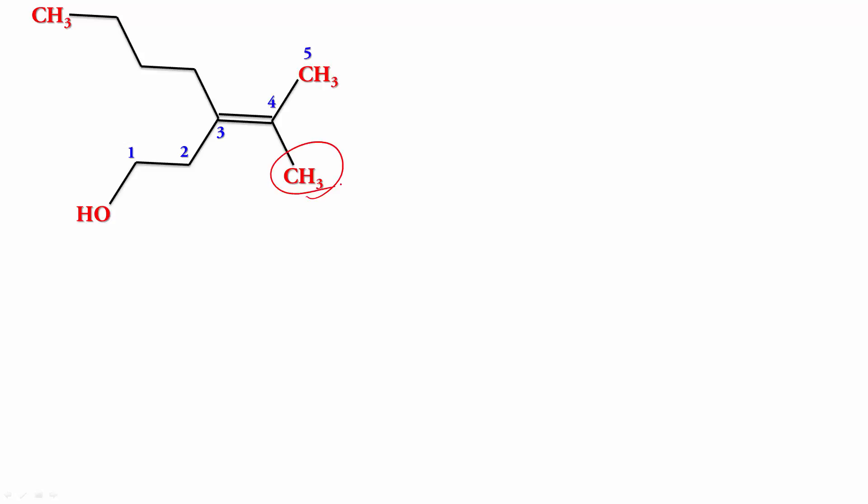On carbon 4, you have methyl sitting here and butyl sitting here. Butyl will come before methyl when it comes to naming. So it's 3-butyl-4-methylpent-3-en-1-ol.